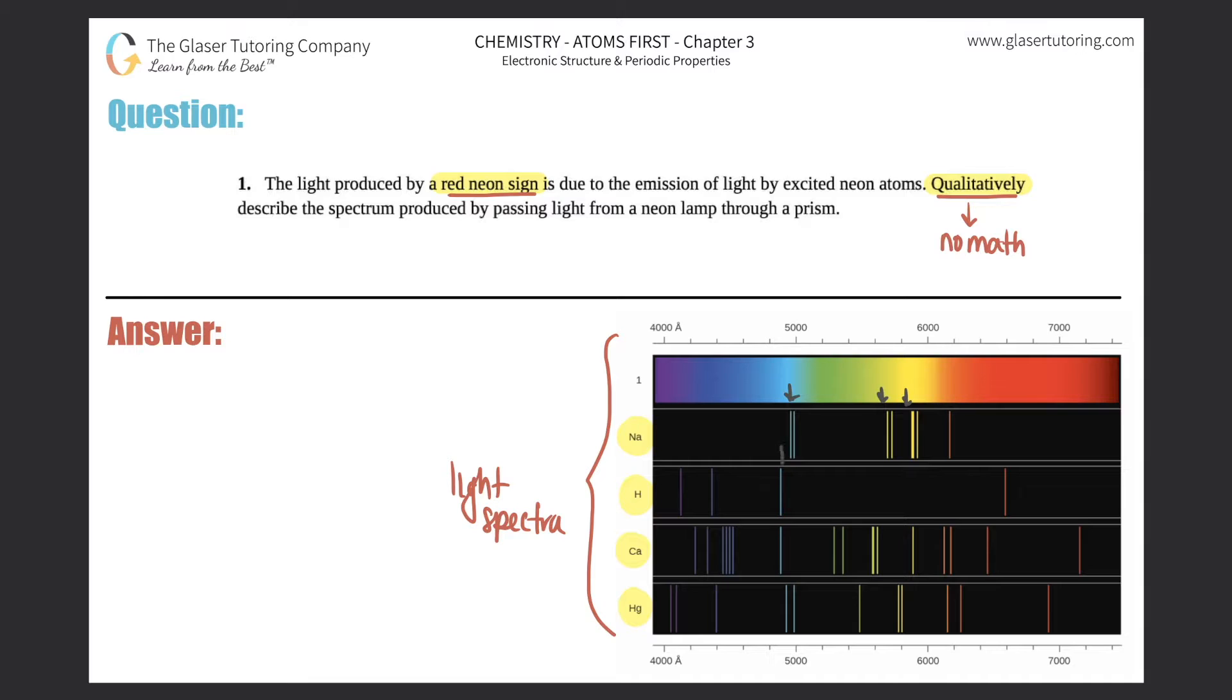If you could see me, I'm doing air quotes right now. But for each one of them, hydrogen has a blue line here. Calcium has many different lines, and they're all different colors.